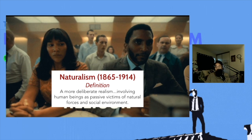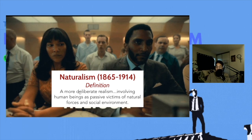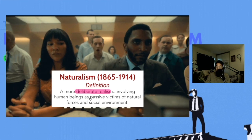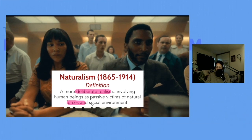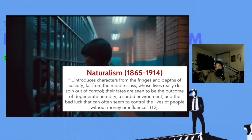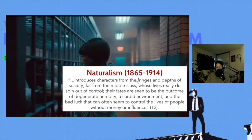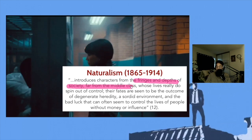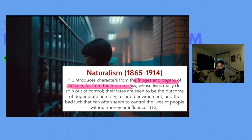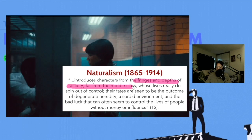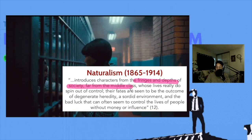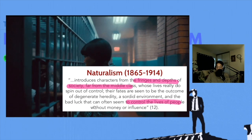According to the Oxford Dictionary of Literary Terms, naturalism is a more deliberate realism, involving human beings as passive victims of natural forces and social environment. Naturalism introduces characters from the fringes and depths of society, far from the middle class, whose lives really do spin out of control. Their fates are seen to be the outcome of degenerate heredity, a sordid environment, and the bad luck that can often seem to control the lives of people without money or influence.